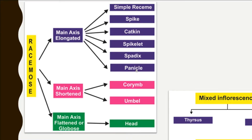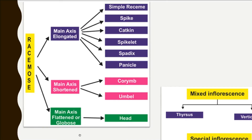The second type is main axis shortened — the main peduncle is shortened — and this is classified into corymb, umbel, and head. The third type is main axis flattened or globose, where the main axis is not elongated but flattened, and it is called head inflorescence.